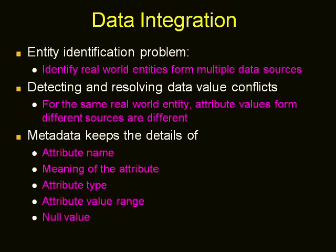The problem of entity identification is very important while integrating sources. We use name equivalents to combine, but how can real-world entities from different data sources be matched? The matching is generally done by using entity identification. For example, customer ID in one database and customer number in another refer to the same entity. To solve such problems, we use metadata because it keeps details of each attribute like name, meaning, type, range of values, and null values. Such metadata helps to avoid errors during schema integration.